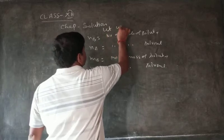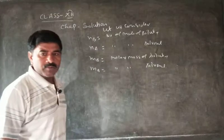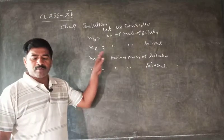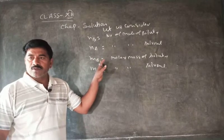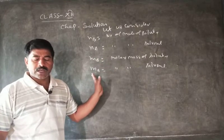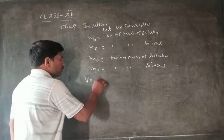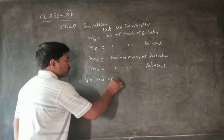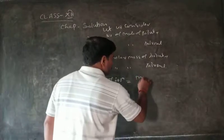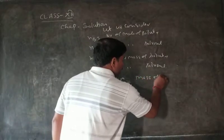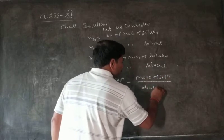Let us define: NB = number of moles of solute, NA = number of moles of solvent, MB = molar mass of solute, MA = molar mass of solvent. The volume of solution is equal to the mass of solution upon density (d).